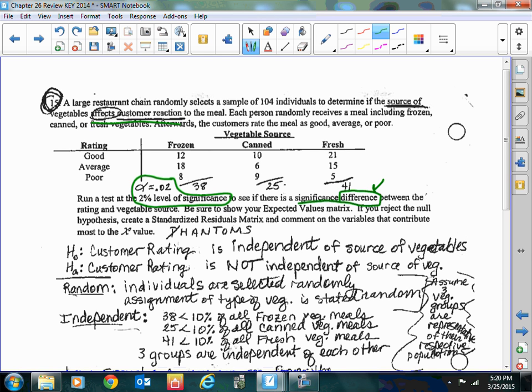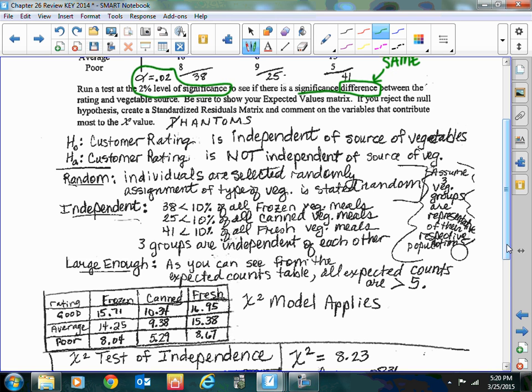To see if there is a significant difference between the rating and the vegetable source. This is also kind of a key play on being the same - is there a significant difference or do we have evidence to dispute them being the same? So if you had done this problem as a chi-squared test of homogeneity, I could have supported that also. But when you do a test of independence, you do not have a parameter of interest. The null hypothesis is customer rating is independent of source of vegetable, and the alternative, that it's not independent. The null is that nothing is going on, it's not affecting it. And then the alternative is that it is affecting it.